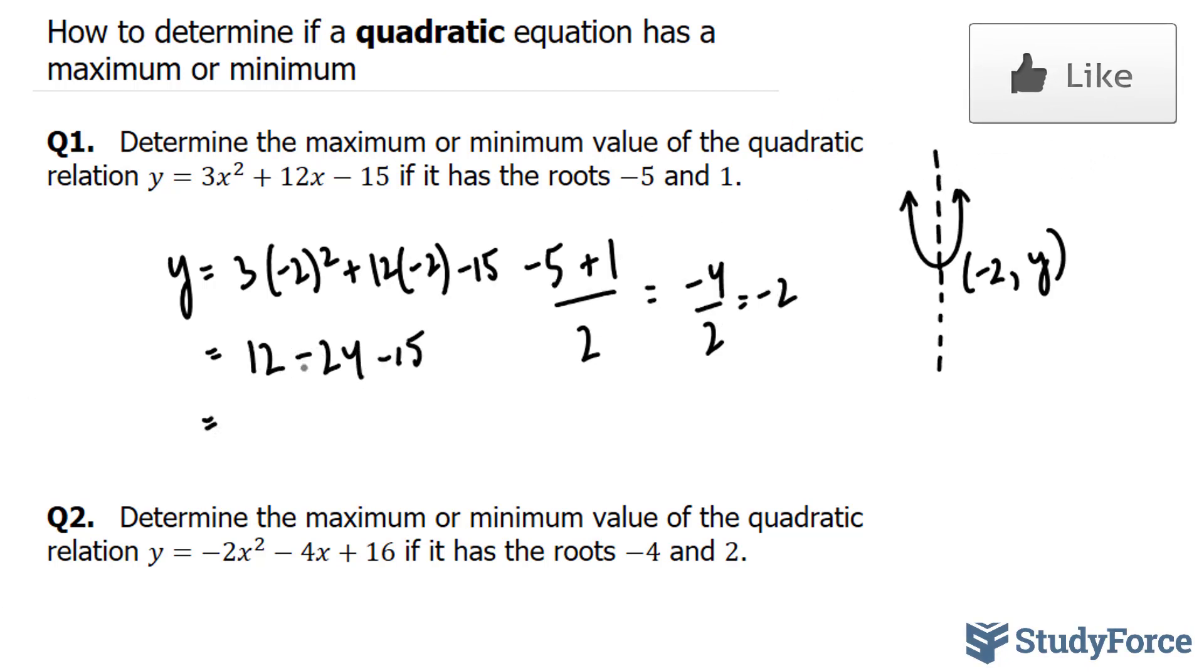12 minus 24 minus 15 gives you negative 27. So therefore, the y-coordinate of this point is equal to negative 27. Therefore, for this equation, there exists a minimum at negative 2 and negative 27.